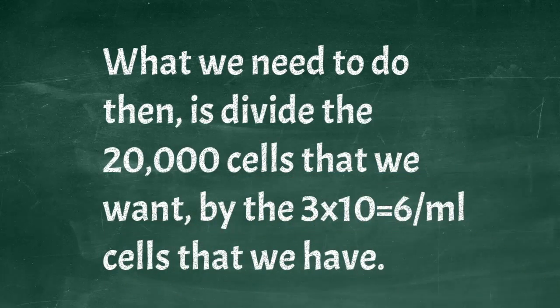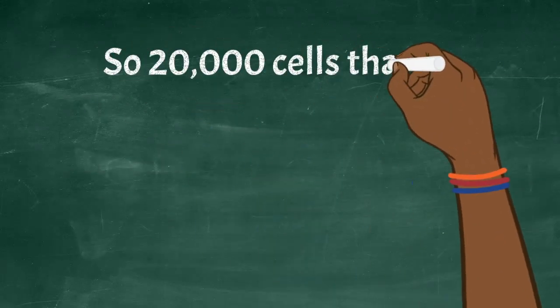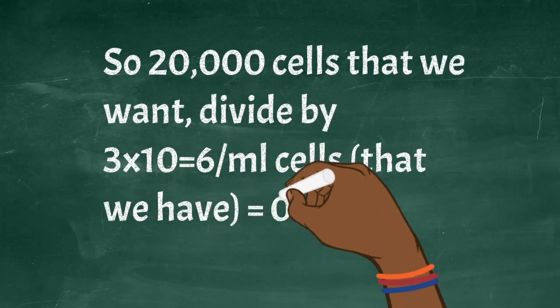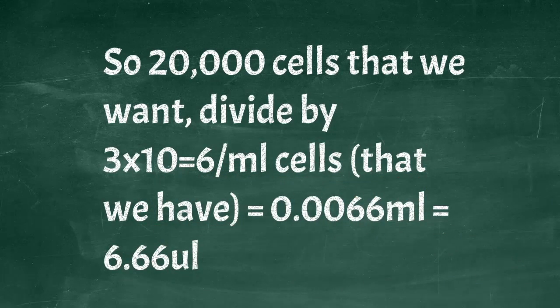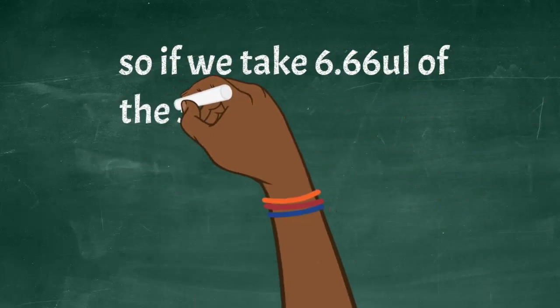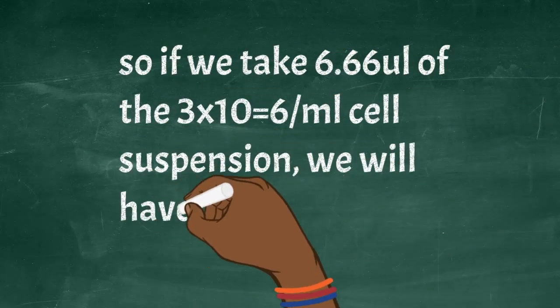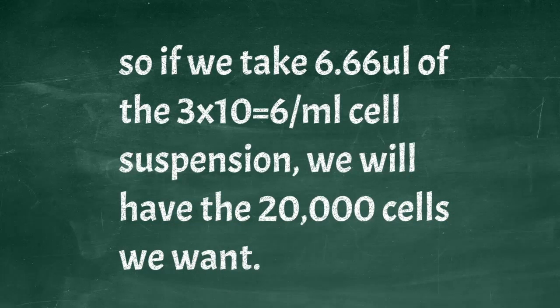We know that we have 3 million cells per ml but we want 20,000 cells in the new culture vessel. What we need to do is divide the 20,000 cells that we want by the 3 million cells per ml that we have. This gives us 0.0066 ml, which is a tiny volume. We can scale it to a microliter by multiplying by a thousand to get 6.66 microliters. So if we take 6.66 microliters accurately from that 3 million per ml cell suspension, we will have our 20,000 cells that we want.